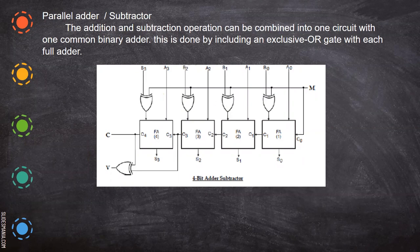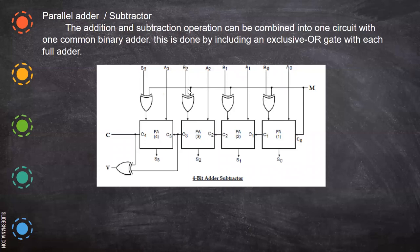We'll see one more diagram where we use a full adder itself — the same full adder circuit can be used for full subtraction too. There is a common control line M given as an input to XOR gates, and each B bit is passed through an XOR gate with M before entering the full adder. Depending on the value of M, the circuit acts as either a full adder or a full subtractor.